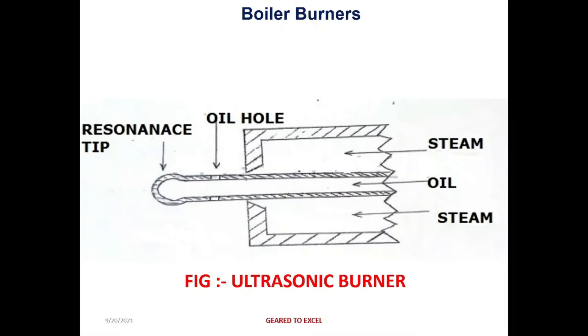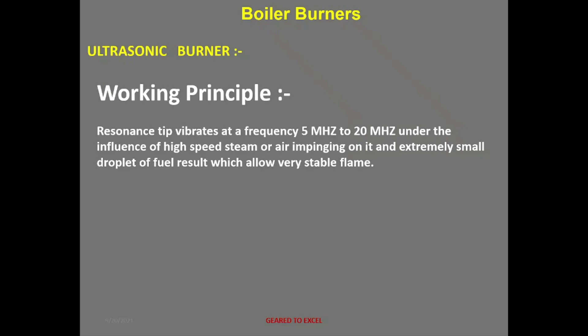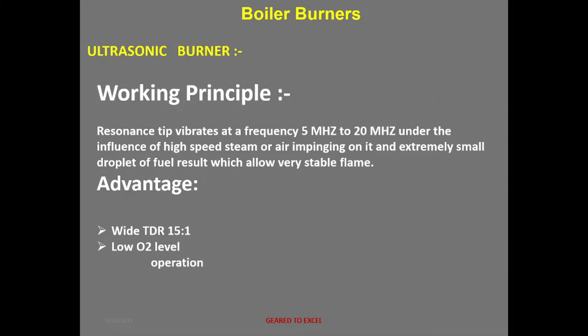The ultrasonic burner has a resonance tip, oil holes, steam inlet, and oil inlet. Working principle: the resonance tip vibrates at a frequency of 5 MHz to 20 MHz under the influence of high-speed steam or air impinging on it, producing extremely small droplets of fuel, which result in a very stable flame. Advantages: wide TDR of 15:1, low O2 level, simple operation, and reduced acid corrosion.